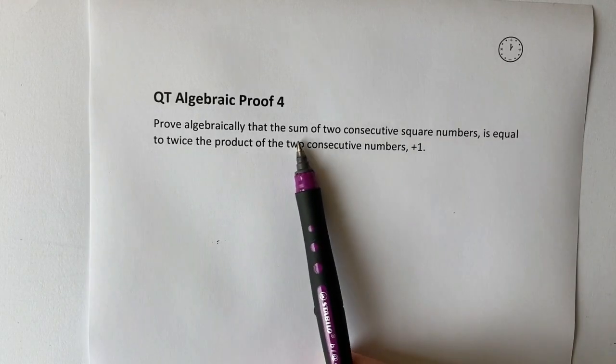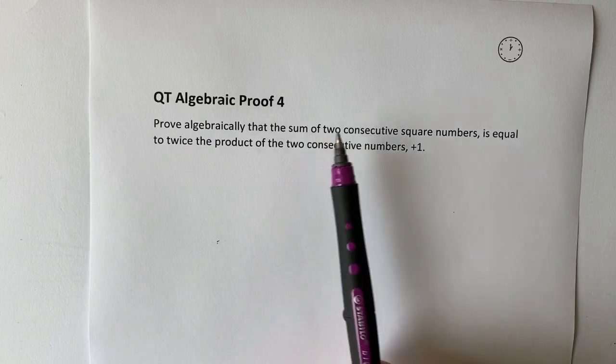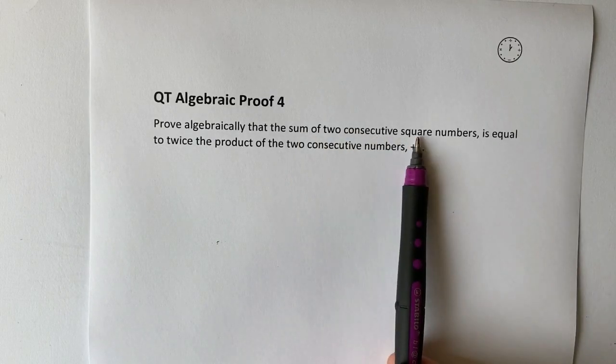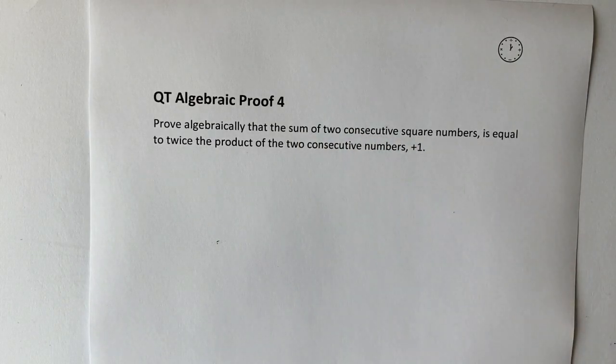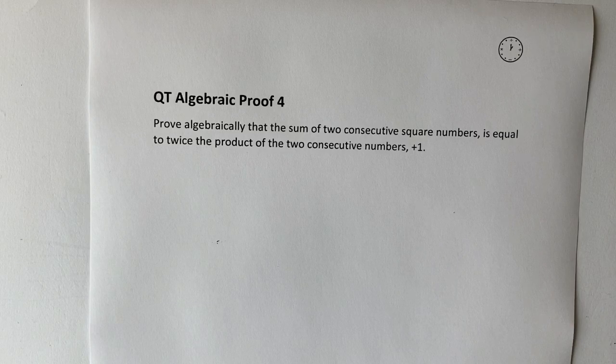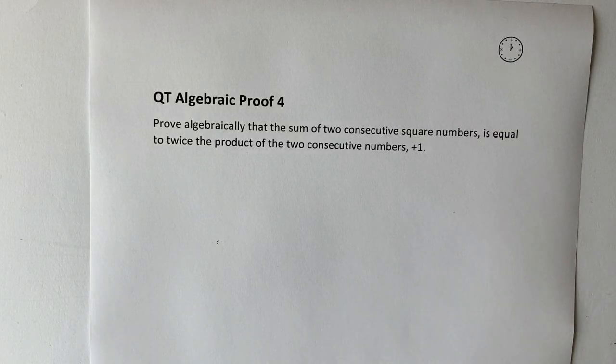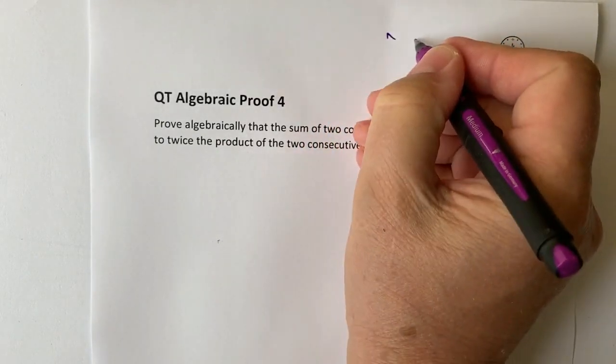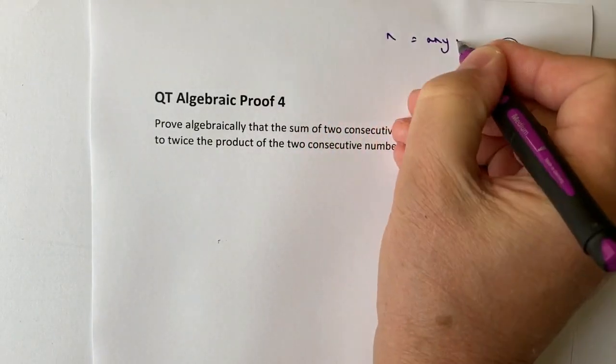So we've got to prove algebraically that the sum, so we're going to add them, of two consecutive square numbers. Let's look at the numbers themselves. So in algebraic proof's point of view we're going to say that n is equal to any number.